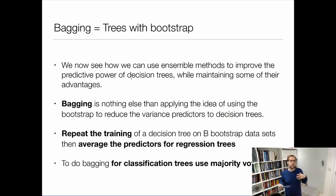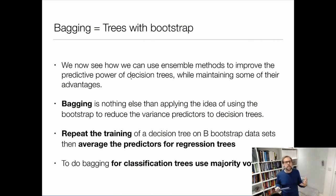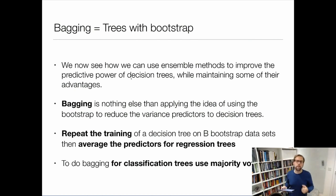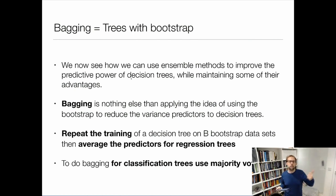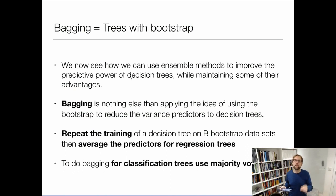For the classification case, rather than the mean I take a majority vote. The first model says class 1, the second says class 0, the third says class 1, and so on — the majority says class 1, so I predict class 1.